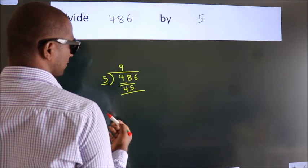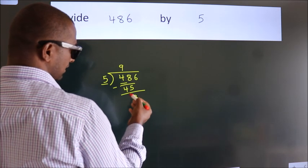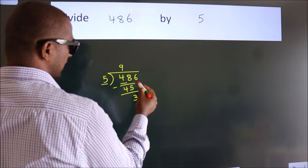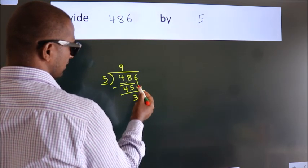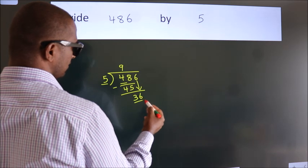Now, we should subtract. We get 3. After this, bring down the beside number. So, 6 down. So, 36.